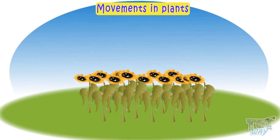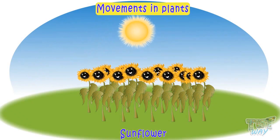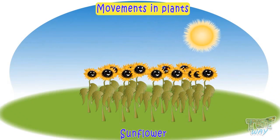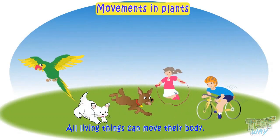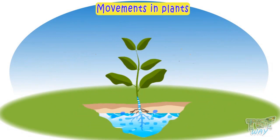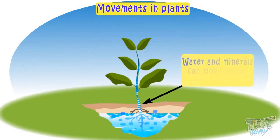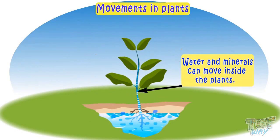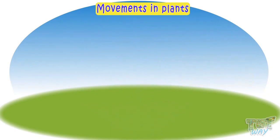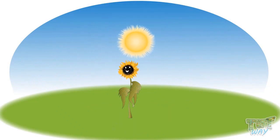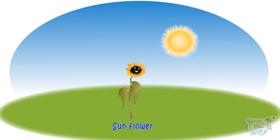Here's another example of movement in plants. In sunflower plants, the flowers move with the direction of the sun — they always face towards the sun. So all living things can move their body or can move things inside them. Plants can't move their body, but they can move water and minerals from one part to another, and some plants can move their body too, to some extent, like the sunflower, which moves with the direction of the sun.